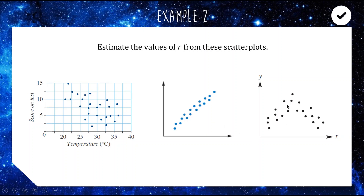Think hard about this one because it's a bit weird — it's kind of non-linear. For the first one, I would say it is a negative correlation and it's fairly weak — I'd be putting it probably around negative 0.3.